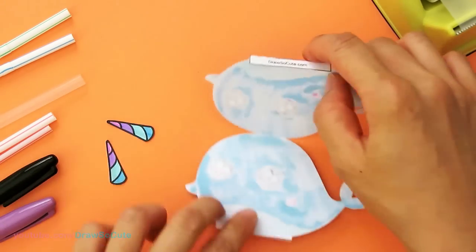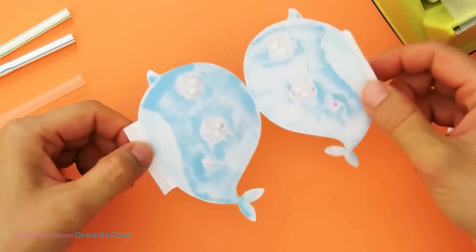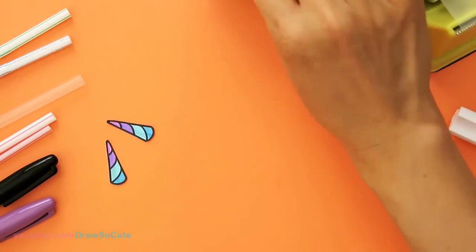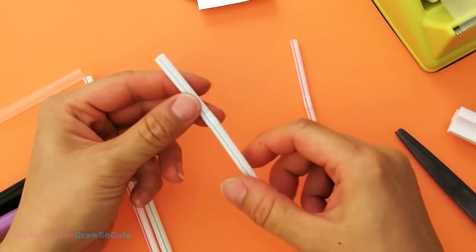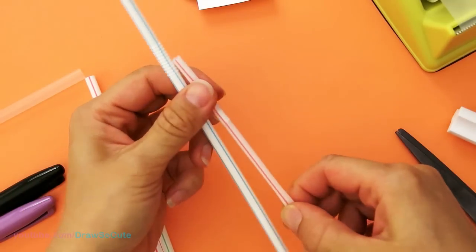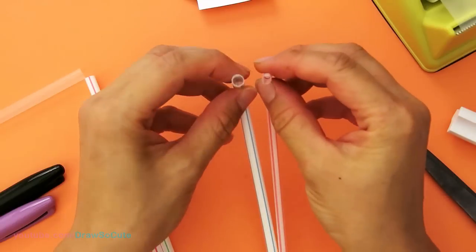So the next thing is to work on the straw part right here. So before we do that, I wanted to go ahead and talk to you a little bit about the straws. What you will need for this project is a bendy straw. So right here are two different sizes of bendy straws.